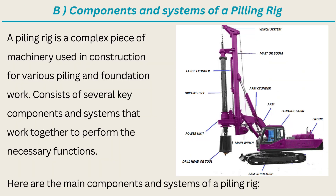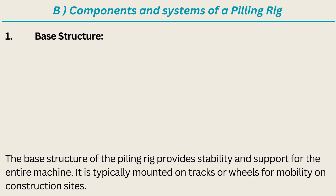Components and Systems of a Piling Rig: a piling rig is a complex piece of machinery used in construction for various piling and foundation work. It consists of several key components and systems that work together to perform the necessary functions. The base structure of the piling rig provides stability and support for the entire machine. It is typically mounted on tracks or wheels for mobility on construction sites.